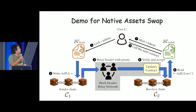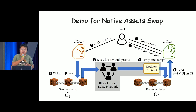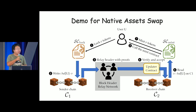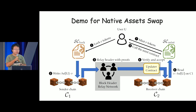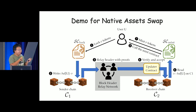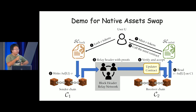Here is an overall demo for ZK Bridge. The user first needs to lock tokens into the lock contract. The lock contract will eventually generate a transaction stating that some user has locked tokens, and this transaction will be integrated into the sender chain's block. This block gets relayed by our block header relay network, and on the receiver side, there is an updater contract that verifies this relay proof. Once verification is done, it writes the block header into the receiver chain.